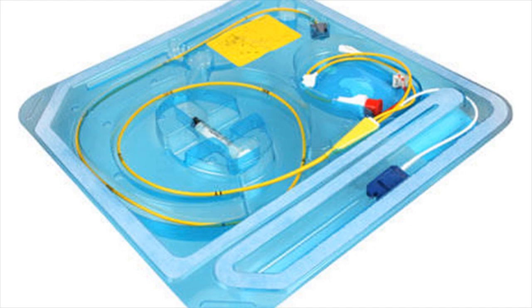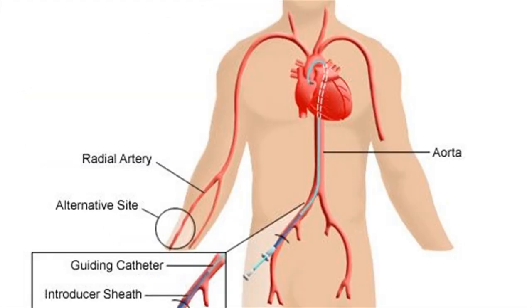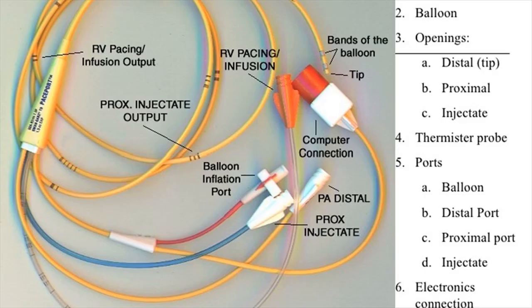Besides this, Swan-Ganz catheterization is also at times employed in arrangement with endocardial biopsy — the exclusion of a tiny portion of your heart tissues — so your heart can be prepared for heart transplant. The pressure of the pulmonary heart needs to be extremely low for the recipient of the heart transplant, and the Swan-Ganz catheter helps determine whether or not medications are required for lowering the blood pressure.